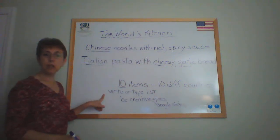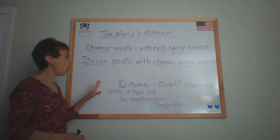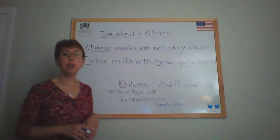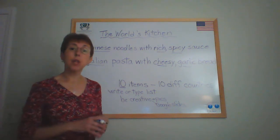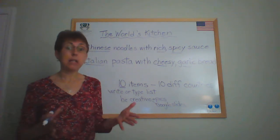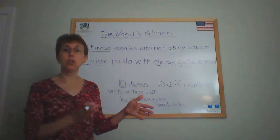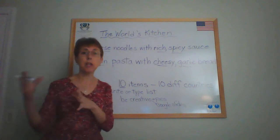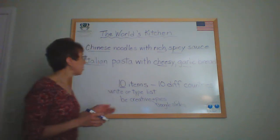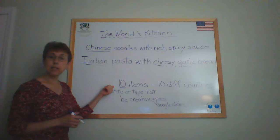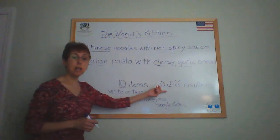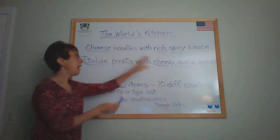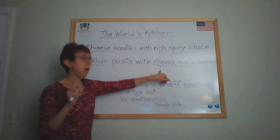You can write or type your list, or you can be as creative as you would like. If you'd like to include pictures, or if you'd like to do it on Google Slides and do a slide for each country and each item, you may do that as well. Again, at least 10 items meaning 10 different countries, and you have to include that proper adjective and at least one other adjective.